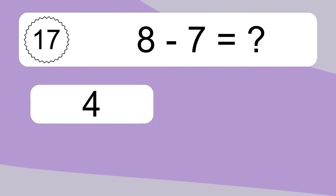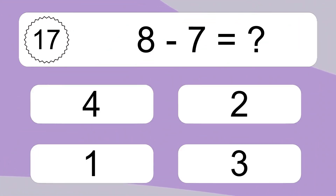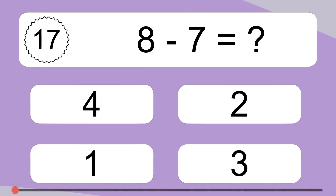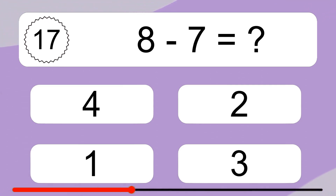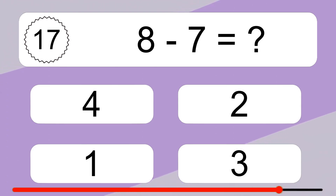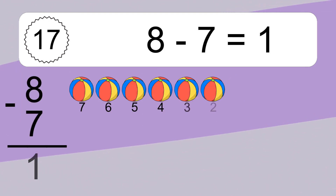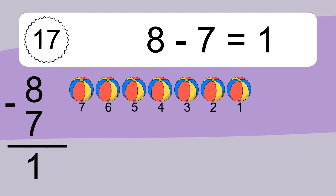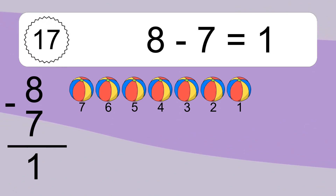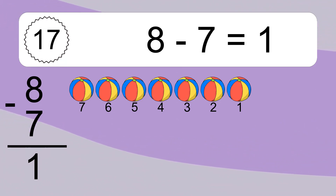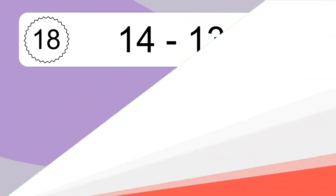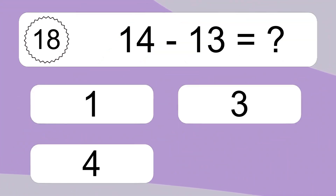8 minus 7 equals what? 8 minus 7 equals 1. Let's count it. 7, 6, 5, 4, 3, 2, 1.